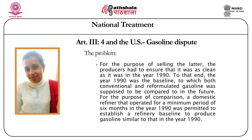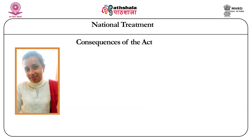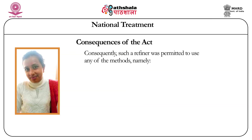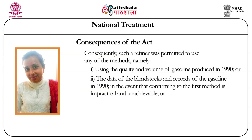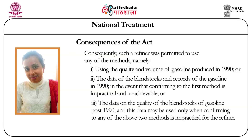For the purpose of comparison, a domestic refiner that operated for a minimum period of 6 months in the year 1990 was permitted to establish a refinery baseline to produce gasoline similar to that in 1990. A refiner was permitted to use any of the methods: using the quantity and volume of gasoline produced in 1990, the data of the blend stocks and records of gasoline in 1990 when confirming through the first method is impractical, or thirdly the data on quality of blend stocks of gasoline post-1990, which may be used only when confirming to either of the above two methods is impractical.